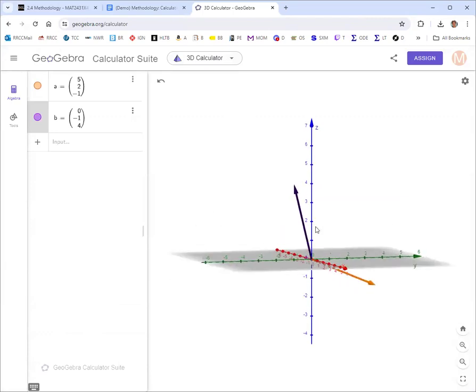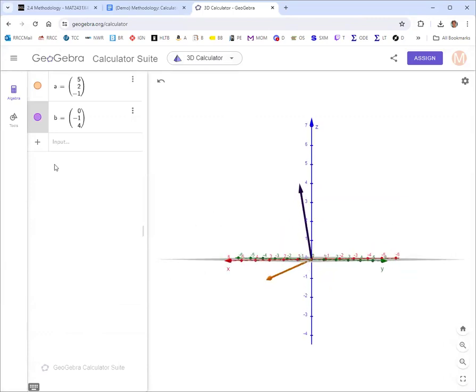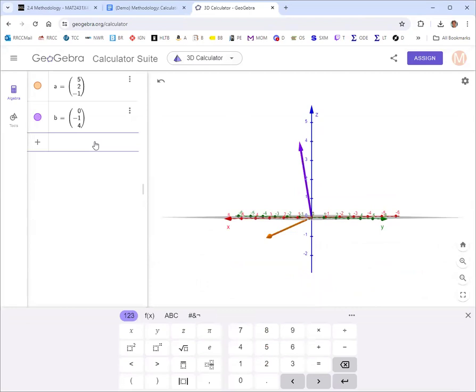Okay, so we've got our two vectors there. Now we'll put in the cross product vector that we found, which I'll call bxa.